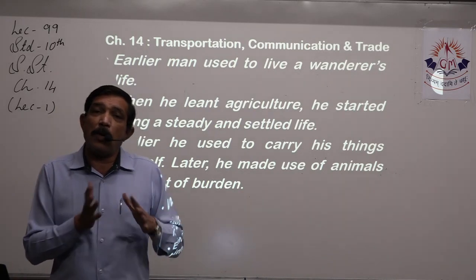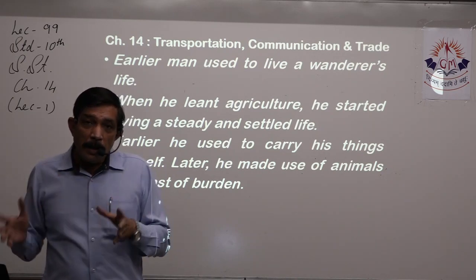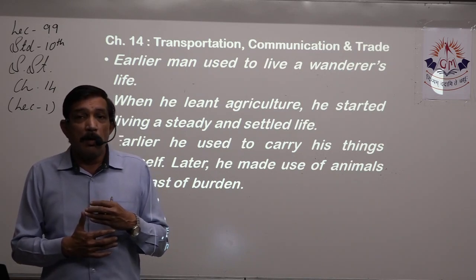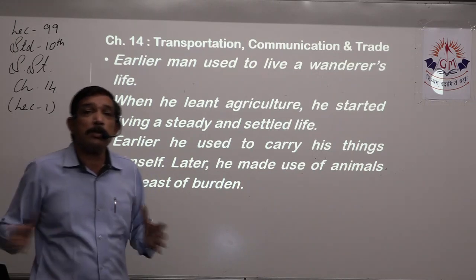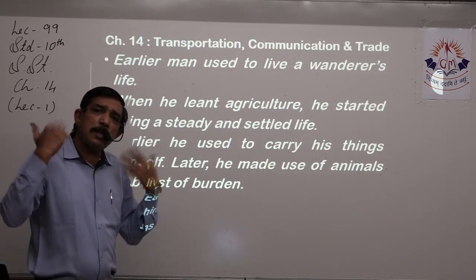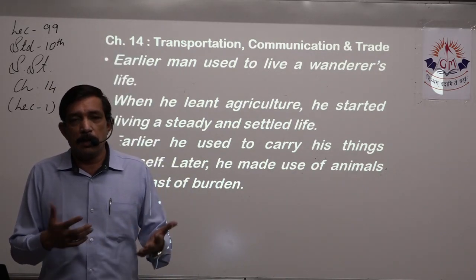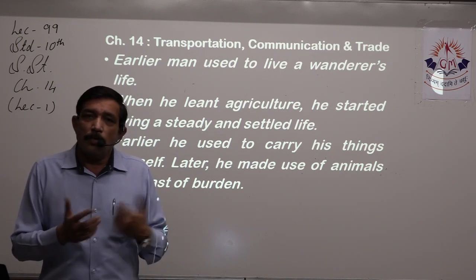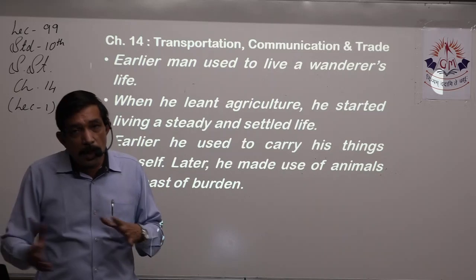The animals were harnessed to the carriage or cart and things became easier — more load could be carried in a cart with one or two animals attached. When he learned agriculture and settled life, he first used to carry things himself, but then found out that animals could be domesticated. He domesticated animals like donkeys, horses, and camels — animals which can carry loads — and shifted his load onto them, using animals as beasts of burden.